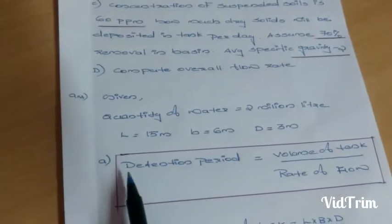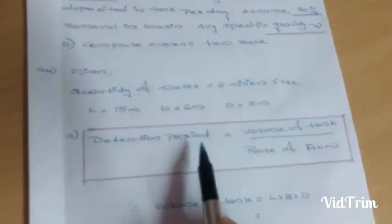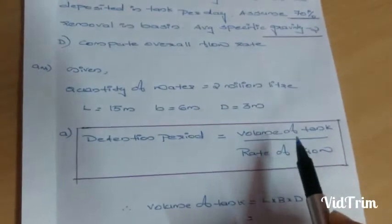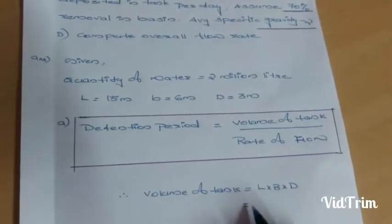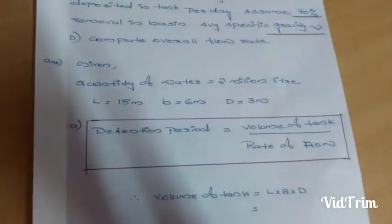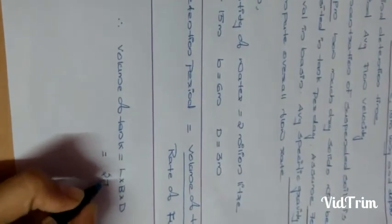First we have to find out the detention period, which is volume of the tank divided by the rate of flow. Volume of the tank is length into breadth into depth. We have length equal to 50 meter, 6 meter, into 3 meter. Multiplying this, we get volume equal to 270 meter cube.